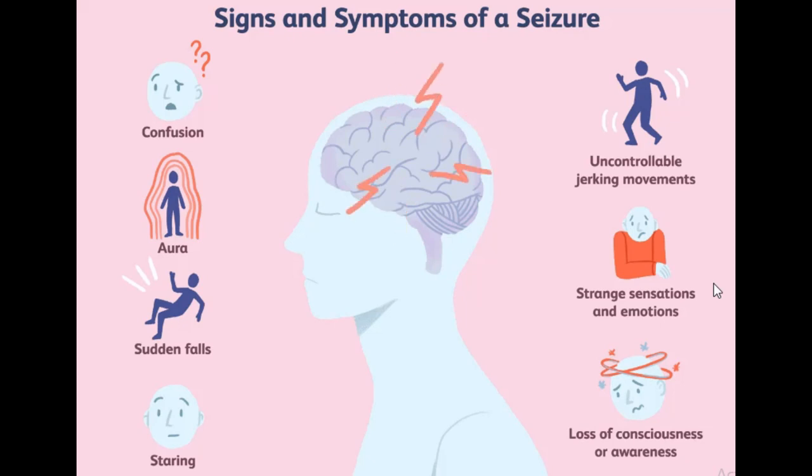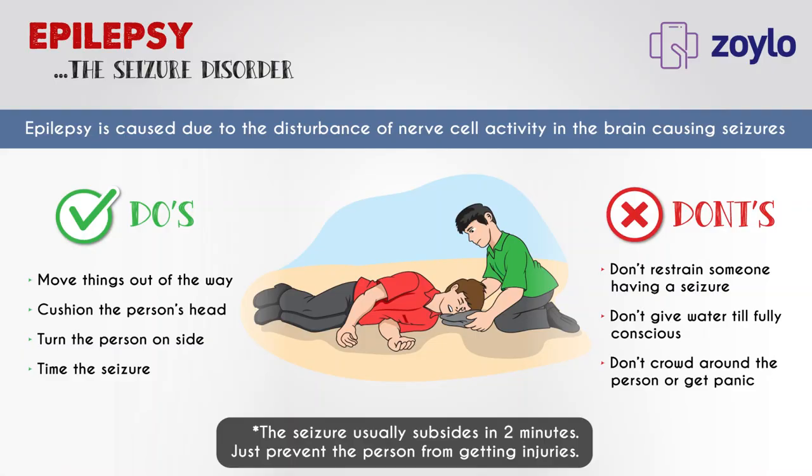Basically, anything that interrupts the normal activity of your brain can cause a seizure. If you're around someone who is having a seizure, here are some key things you should do: ease the person to the floor, turn them gently on one side so they can breathe properly, clear the area of anything sharp that can injure them, put something soft under their head, remove their glasses if they're wearing any, loosen ties from around their neck so they can breathe properly, and call 911.